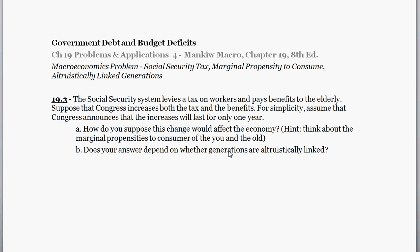Hello and welcome. In this problem, the question deals with how a change to the social security tax — interpreted here as a redistribution of income from young to old — might affect the economy. We find that our answer depends on the marginal propensities to consume of the young and the old, and whether or not generations are linked altruistically. This question is borrowed from chapter 19 of Mankiw's Macroeconomics 8th edition, titled Government Debt and Public Deficits.